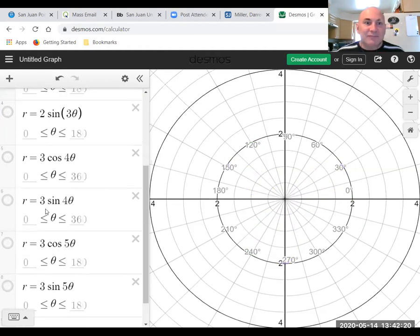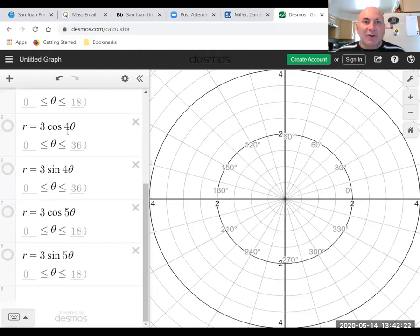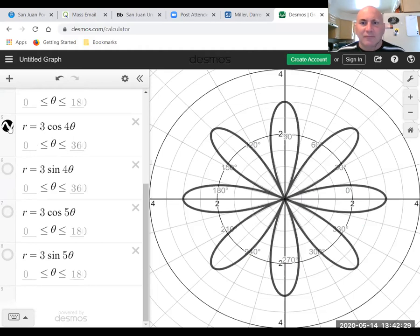Next graph. This time we're going to go to 4 theta. And notice again, 4 theta goes 0 to 360 degrees. And we have 8 petals.